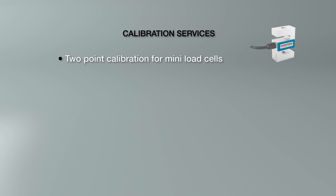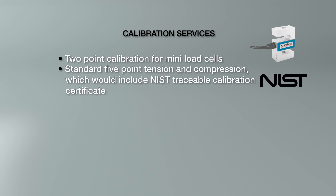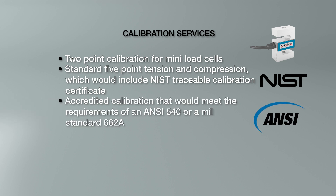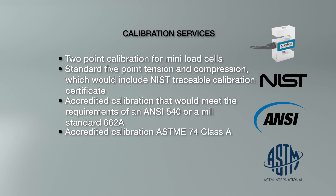Calibration services — we offer a pretty broad range of recalibration options. We have specific calibrations for specific types of load cells. For example, for a mini load cell like an S-type, we offer a basic two-point calibration. Interface's standard calibration is five points tension and compression, and that would include an Interface NIST-traceable calibration certificate. We also offer an accredited calibration that meets the requirements of ANSI Z540 or MIL Standard 45662A — a standard five-point tension and compression that includes an ISO 17025 accredited calibration certificate. We also have ASTM E74 Class A.